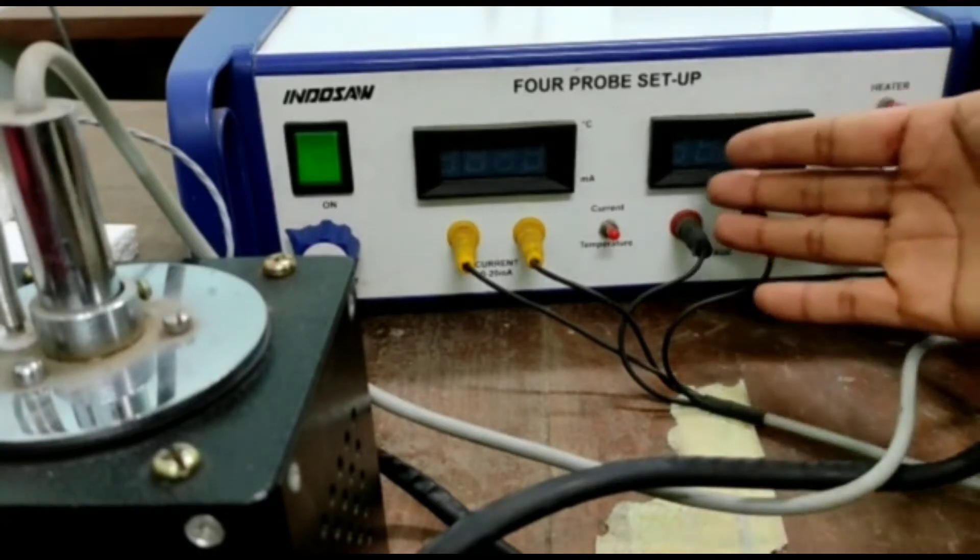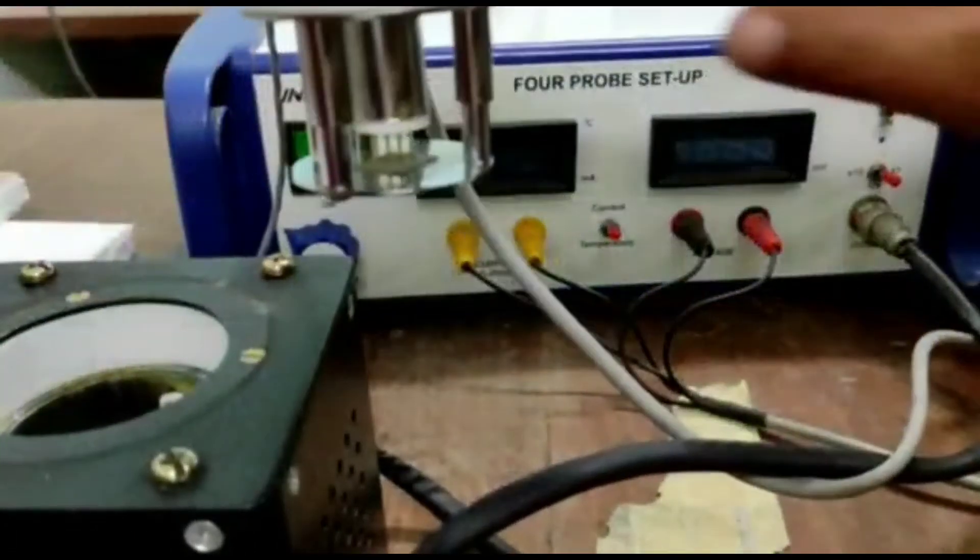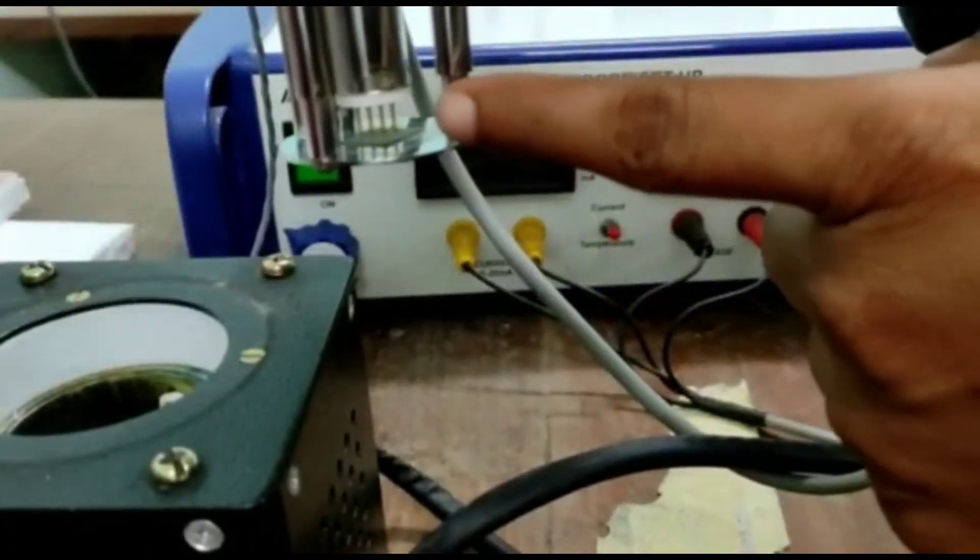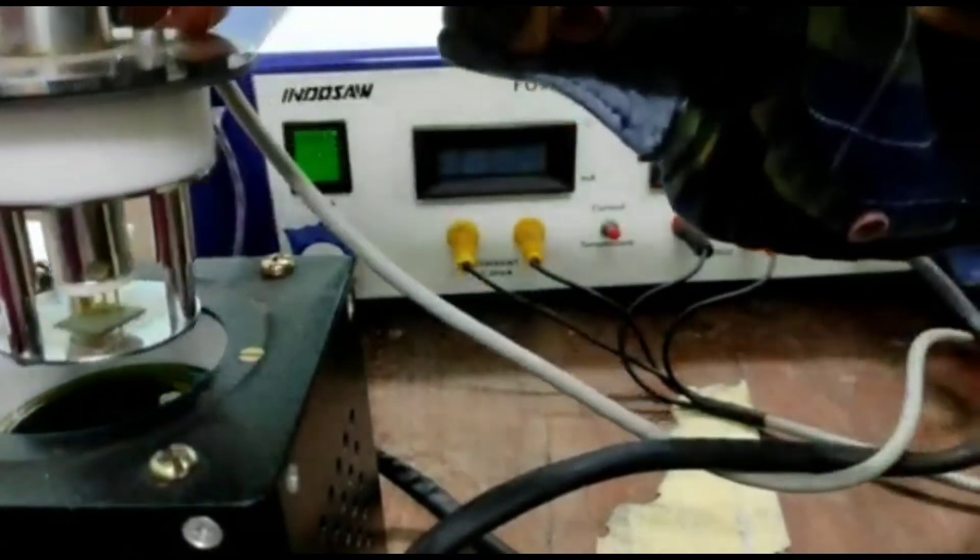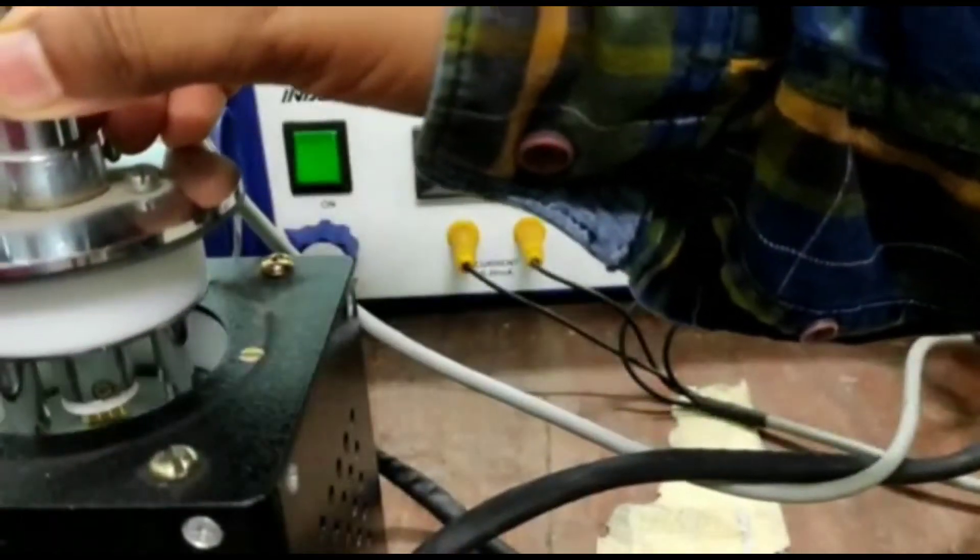As you can see, this is a 4-probe setup and this is an oven. In the oven, you can see the sample is given over there and the 4 probes are also there. Now I put it in the oven.